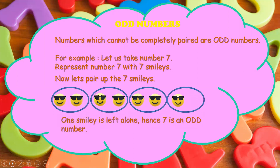What do we observe? One smiley is left alone, hence has no pair. Therefore, 7 is an odd number.